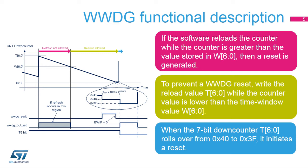If the software refreshes the watchdog while the down counter is greater than the value stored in bits W, a reset is generated. This happens when the application refreshes the watchdog too early, and no interrupt is generated in this case. To prevent a window watchdog reset, the watchdog refresh must happen while the down counter value is lower than the time window value and greater than 0x3F. This is illustrated by the green area.